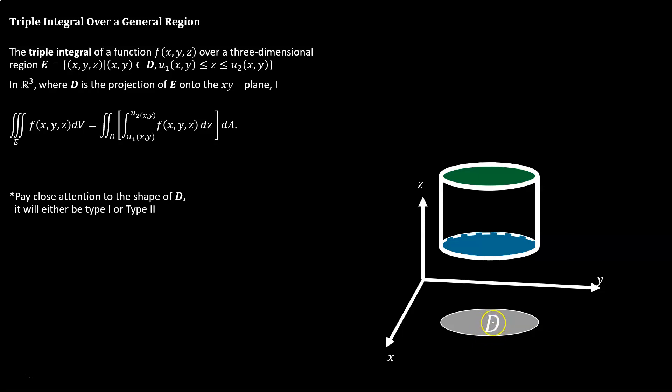It's a projection from the solid E down into the xy plane. And we're going to define the top of the solid E by the function u1 and the bottom by the function u2. Oh, I have those backwards. This should be u2 on top and this should be u1 on bottom. So that when we set up our triple integral, it's just like how we did our double integral over a 2D region.